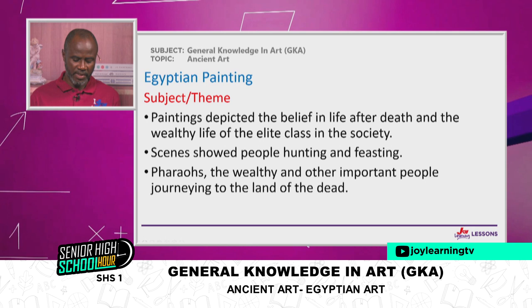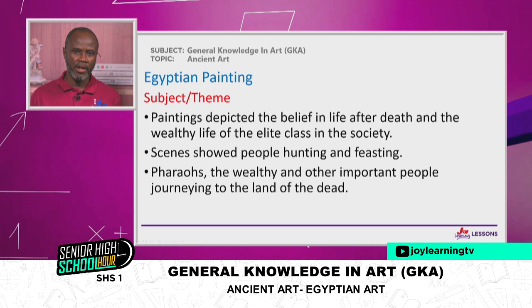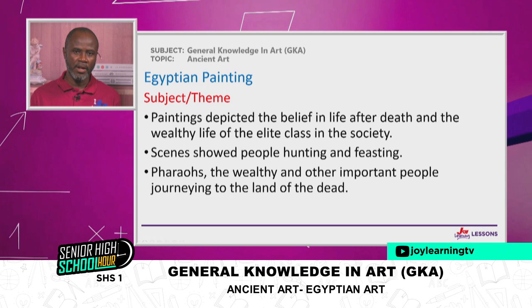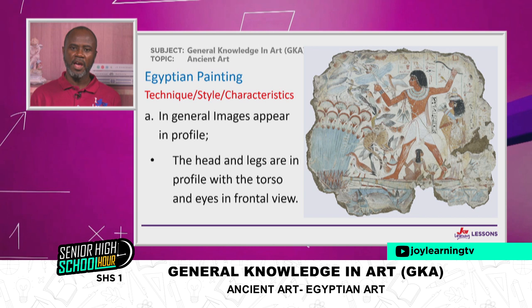Paintings depicted the belief in life after death and the wealthy life of the elite class in society. Scenes also showed people hunting and feasting. The pharaohs and the wealthy and other very important people were the subject of the themes for Egyptian art and painting. Now let's look at Egyptian painting in terms of technique, styles, and characteristics. Look carefully at the image right in front of you — most of the images were in profile. When we say an image is in profile, that means it's a side view.